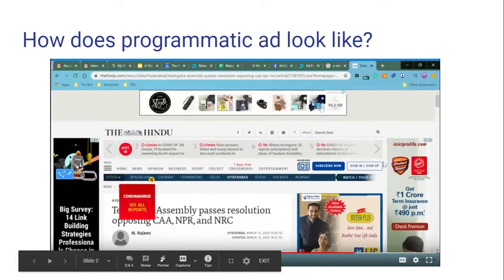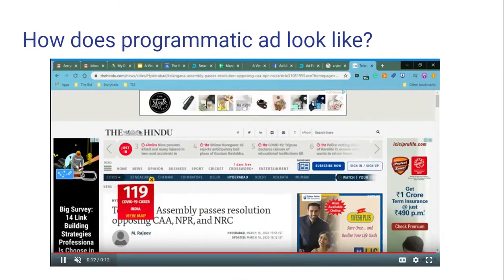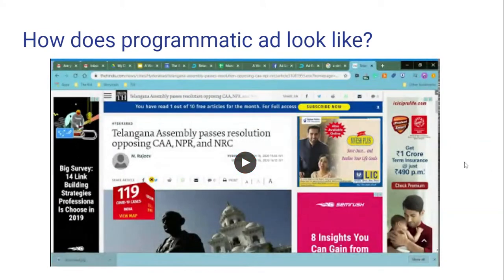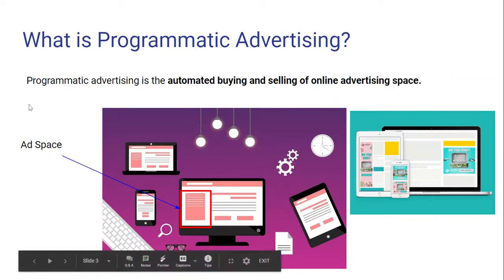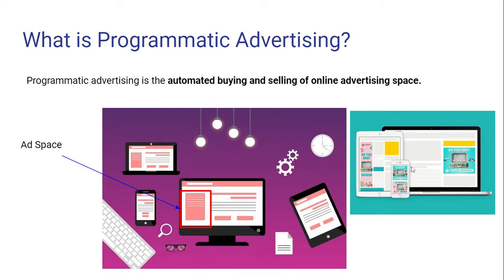You might have already seen programmatic ads in your day-to-day life because when you browse from one website to another you always see them. Programmatic ads appear on ad spaces called inventory. It will look something like this on your tablet, something like this on your desktop, and something like this on your mobile phone.